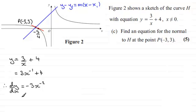Now, it's a good idea not to leave this as a negative power. Remember, this is minus 3 multiplied by 1 over X squared, which will come to minus 3 over X squared.